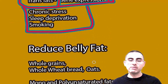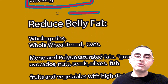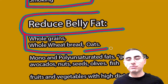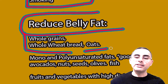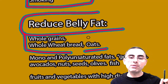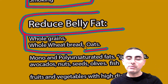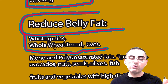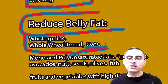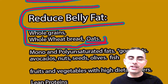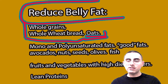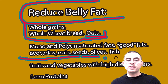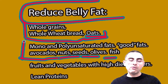Chronic stress, sleep deprivation, and smoking are also important risk factors. Now, how can we reduce belly fat? Whole grains, whole wheat bread, and oats are very important due to their high dietary fiber content. Dietary fiber is not only healthy but also inhibits fat absorption from the intestines, which is why foods rich in dietary fiber are very beneficial.